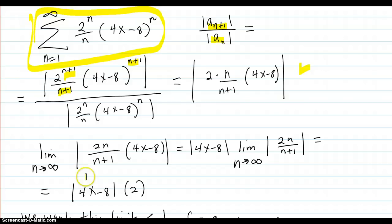And then we say, okay, the limit of that, what does it limit to? So this is here. We factor out 4x minus 8 out of this limit because n is moving, not the x.